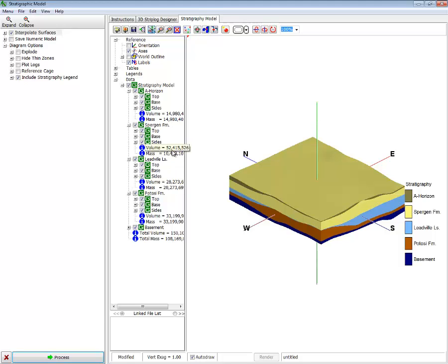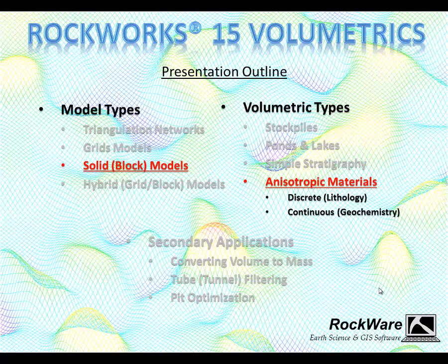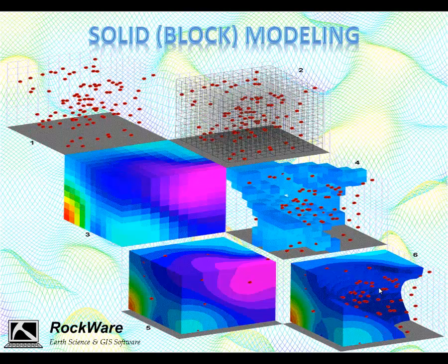For some units, like the Spurgeon Formation, you can see 52 million cubic feet of material and 10 million tons of material. The solid or block modeling process is similar to the gridding process, except that we're dealing with three-dimensional cells or voxels. These types of models are useful when dealing with geologic parameters that vary both vertically and horizontally, or anisotropically.